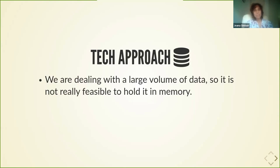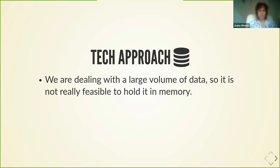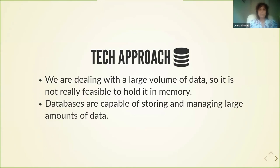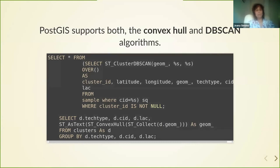Those tools are databases. Databases are capable of storing and managing data, and we can select the data we want, and then write and read from the database as needed. Fortunately, PostGIS supports both of the algorithms we were looking for — the convex hull and the DBSCAN algorithms are supported in PostGIS. It's possible to implement this complete pipeline in the database, but the idea was to automate this — I didn't want to be pressing a button to run one query after the other.